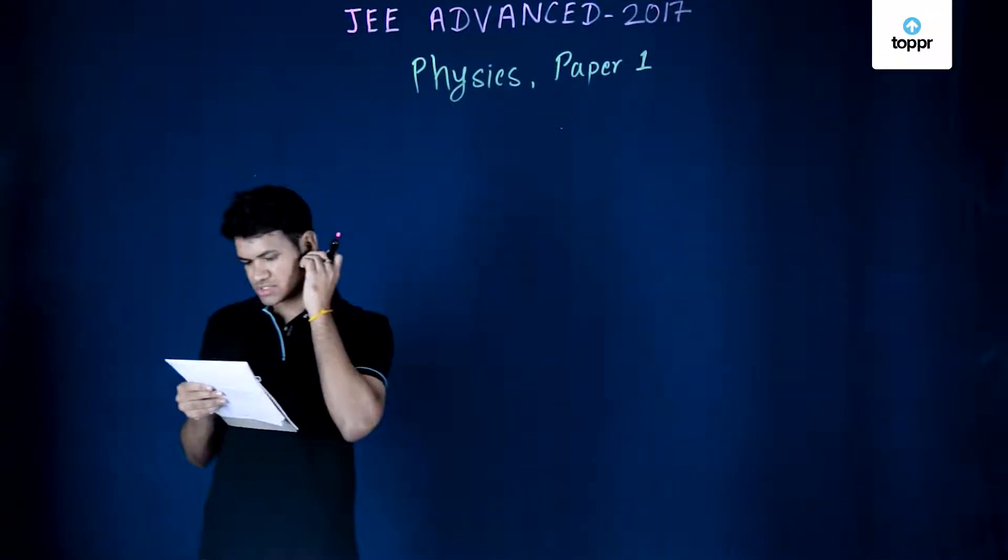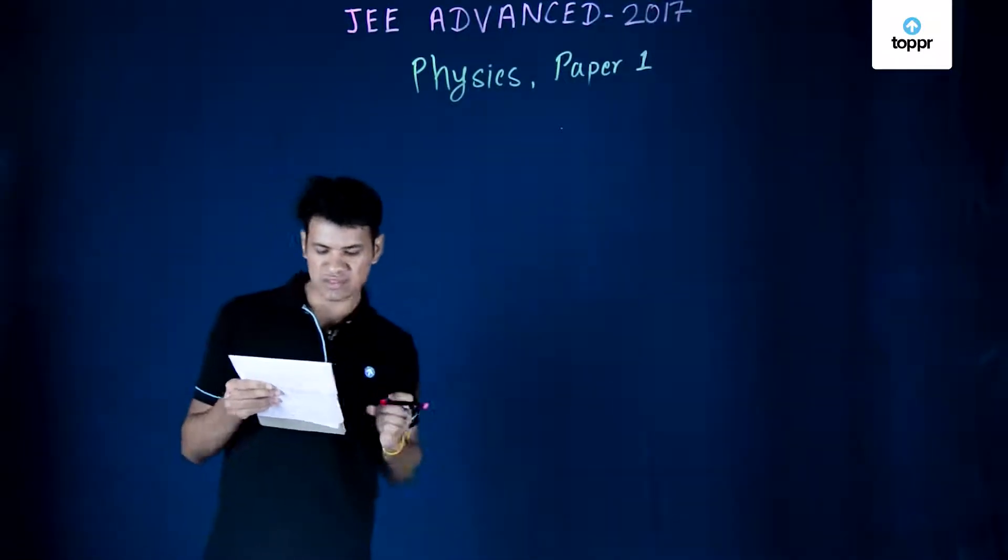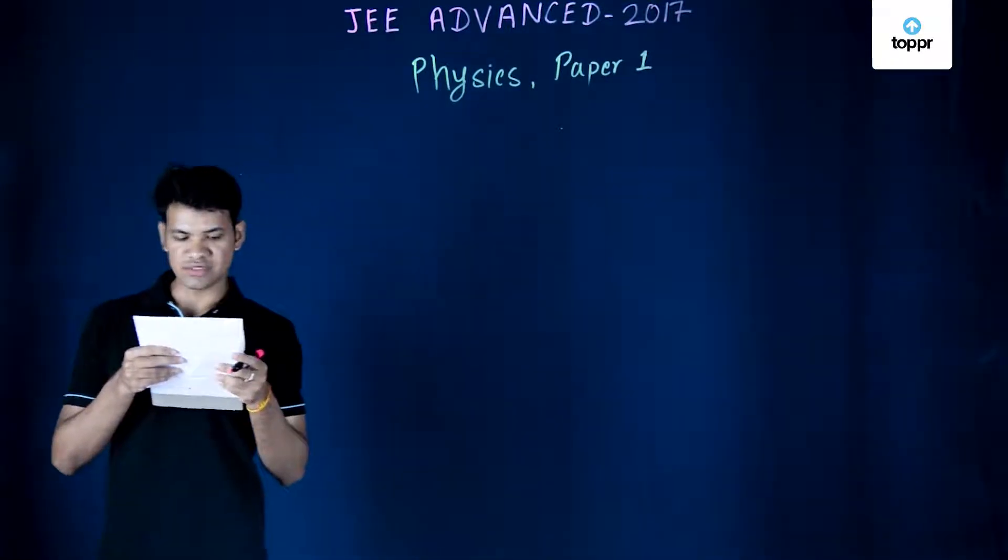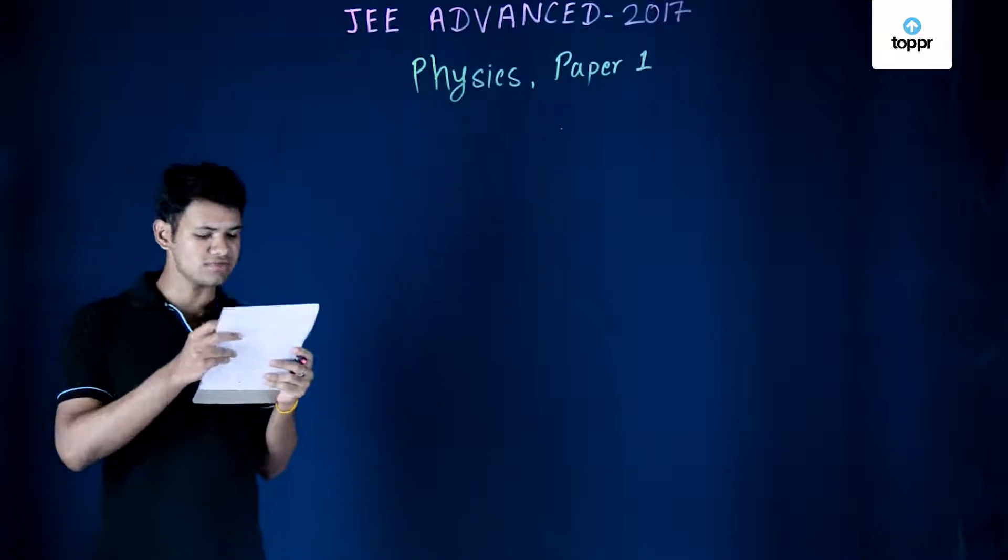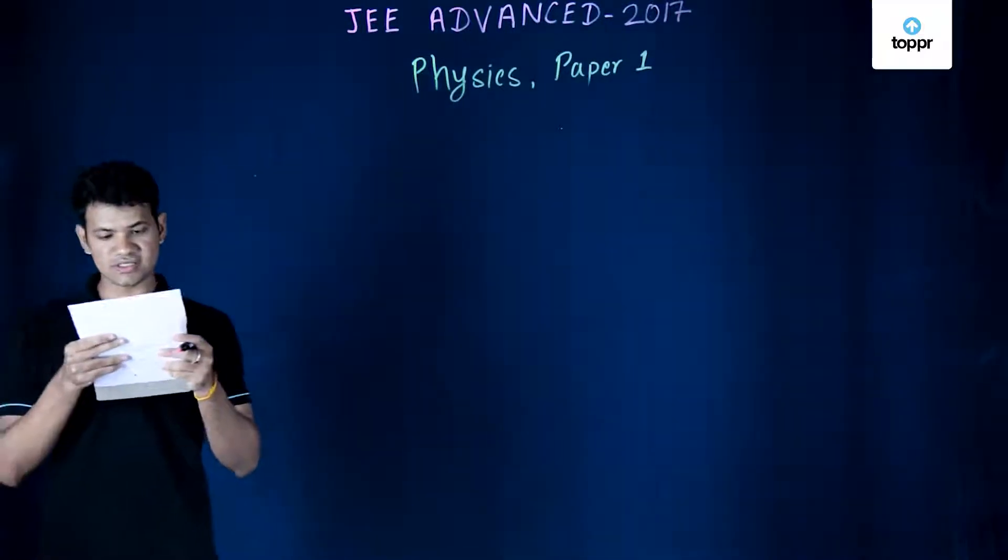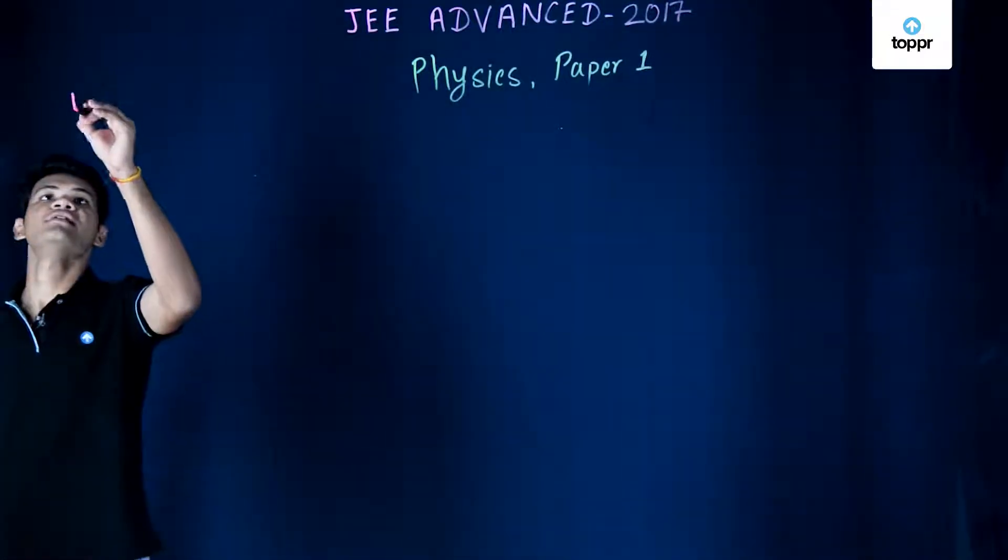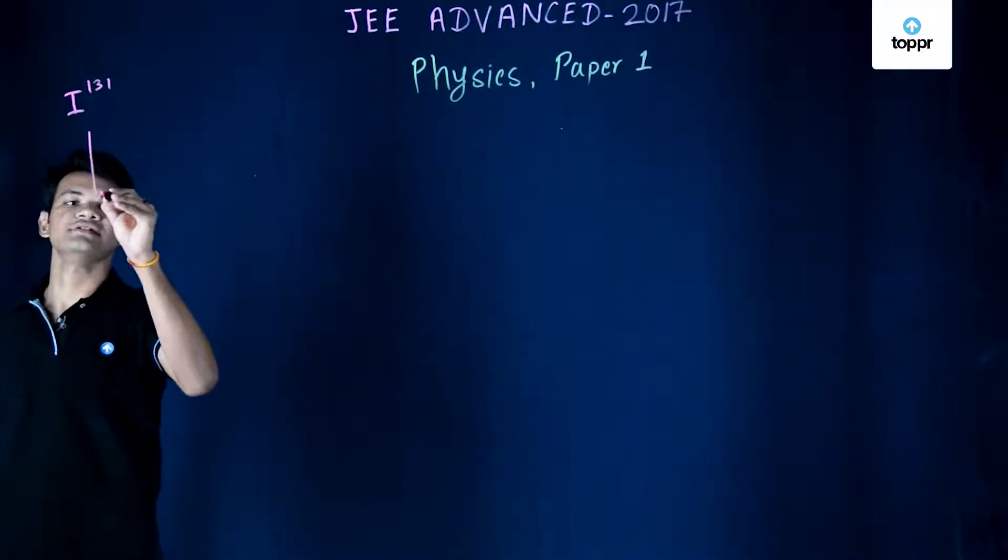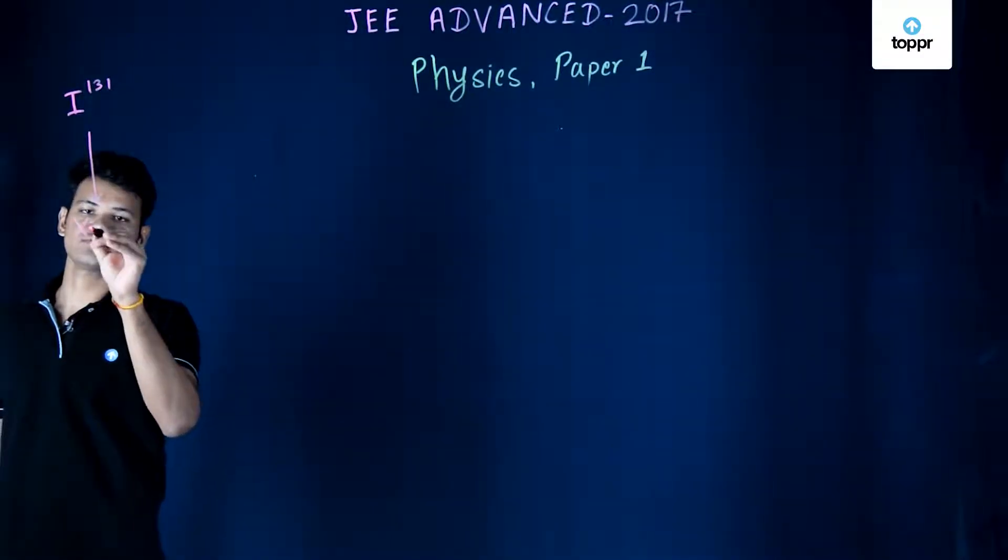Now in this question we need to estimate the total volume of blood in this person's body according to the data given. So let us write down what is given. So basically we have our isotope of iodine which decays down into some isotope of xenon.